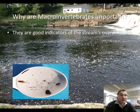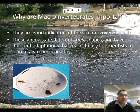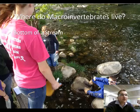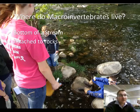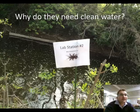There are certain macroinvertebrates that are good indicators of a stream's health. Many of them have different sizes and shapes, and they have different adaptations that help scientists learn if the stream is healthy. We will find them on the bottom of the stream, attached to rocks, or attached to plants or plant parts like roots. We will also find them in fast-moving sections of the water because they need oxygen.